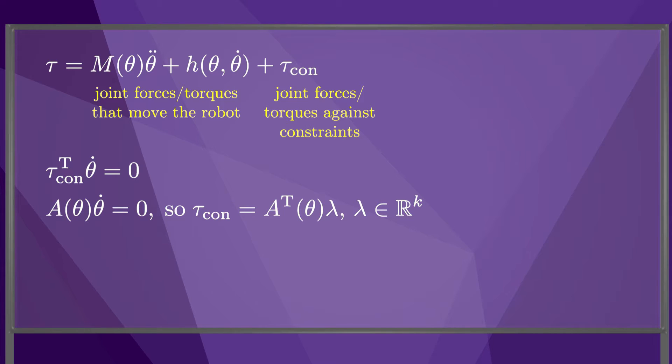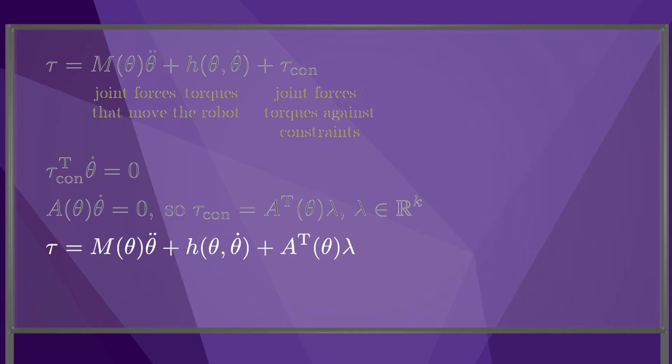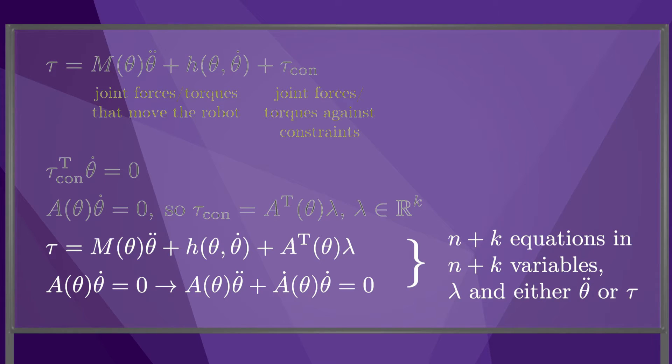With this observation, we can rewrite our dynamics in this form. Since the velocity constraints must be satisfied at all times, they can be expressed as constraints on the acceleration. These are now n plus k equations in n plus k variables, the k Lagrange multipliers and either n joint accelerations or n joint torques, depending on whether we are solving the constrained forward dynamics or the constrained inverse dynamics.